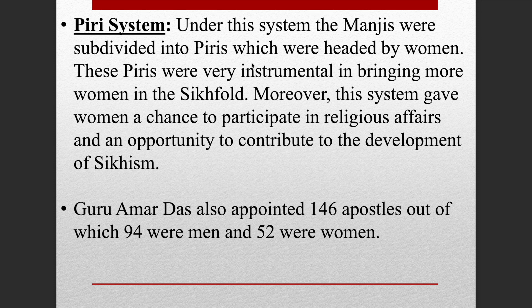Some important names under the Piri system include Bibi Bhani, Bibi Dhani, and Bibi Pal — women who headed piris. Guru Amar Das Ji gave authority and power to 146 of his apostles to go to various parts of the country. Of these, 94 were men and 52 were women.